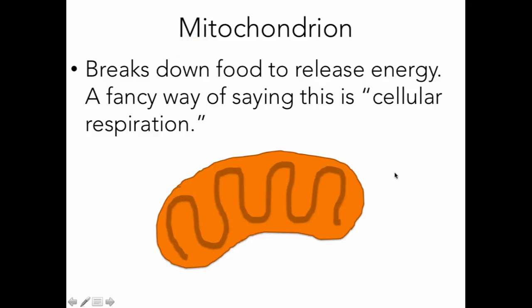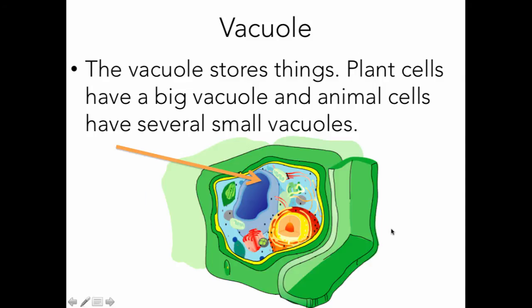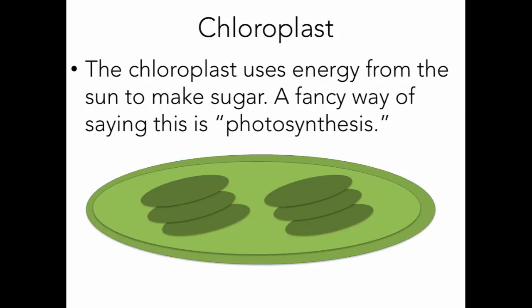The vacuole stores things — it's almost like the locker of a cell. Plant cells have one big giant vacuole, and animal cells have several small vacuoles. We'll learn more about the differences between plant and animal cells later. Plant cells have a much larger vacuole, also known as the central vacuole, while animal cells have a couple of smaller ones.